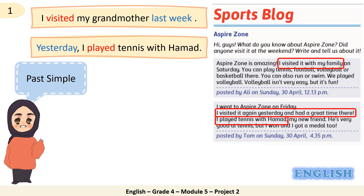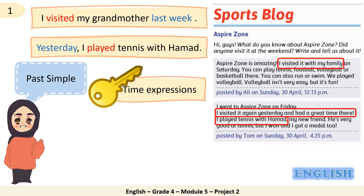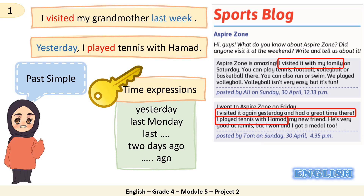Read the second one. 'Yesterday, I played tennis with Hamad.' The time expression is yesterday and the verb is played in the past. Now, what are the time expressions? Let's recall them: yesterday, last Monday, last Sunday, and so on; two days ago, three days ago, and so on. Writing Tip 1: Use the past simple to describe what you did and when. Make sure you use the time expressions when writing your sentences.